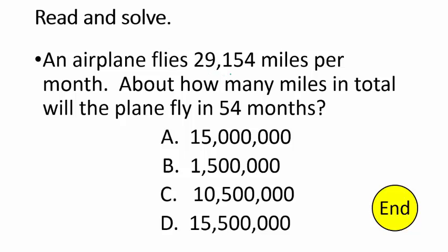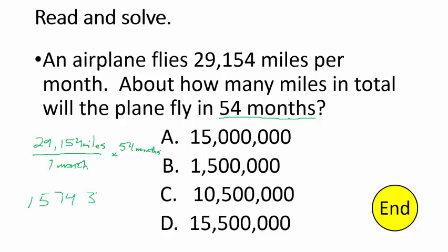An airplane flies 29,154 miles per month. About how many miles in total will the plane fly in 54 months? It's an estimate problem. We're just taking 29,154 miles times 54 months. Grab your calculator: 29,154 times 54 gives 1,574,316. Looking at which answer is the closest estimate, that is about 1.5 million, or choice B.